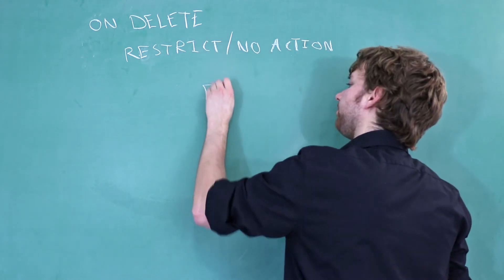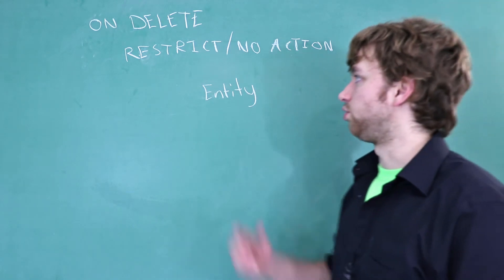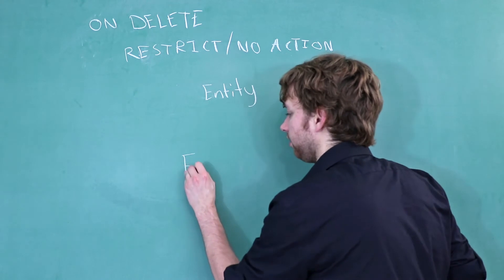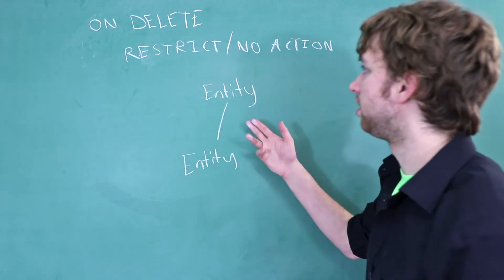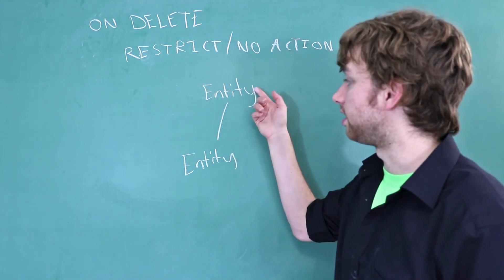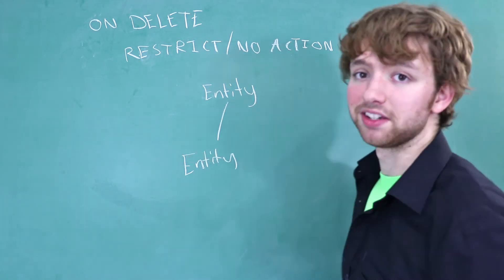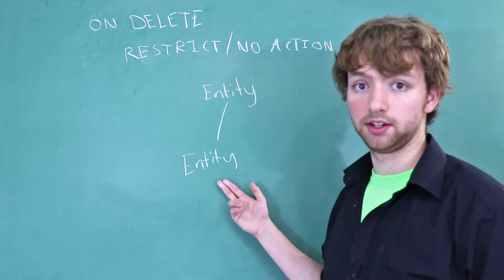and it's not referenced by anything, and then you try to delete that row, it will let you. But if you have another entity down here, this would be the child, and it references this entity. Well now it's not going to let you because it's saying, hey, you can't delete this entity because it's being referenced. So it would say, nope, you can't delete that row. You could delete this row though, because it's not being referenced by anything.